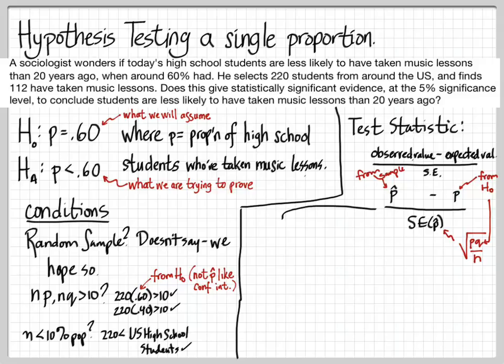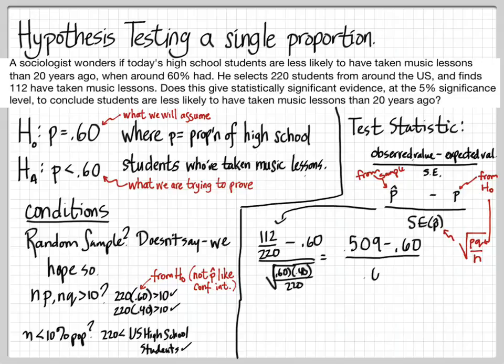Let's run the numbers and get our test statistic — this is going to be a z-score. There's my p-hat, 112 out of 220; there's my p, 60% from the null hypothesis; divided by root p·q over n. I get out my calculator, run the numbers, and I get a z-score of negative 2.75. So this observed value is 2 and three-quarters standard deviations below what you would expect if there actually had been no change.